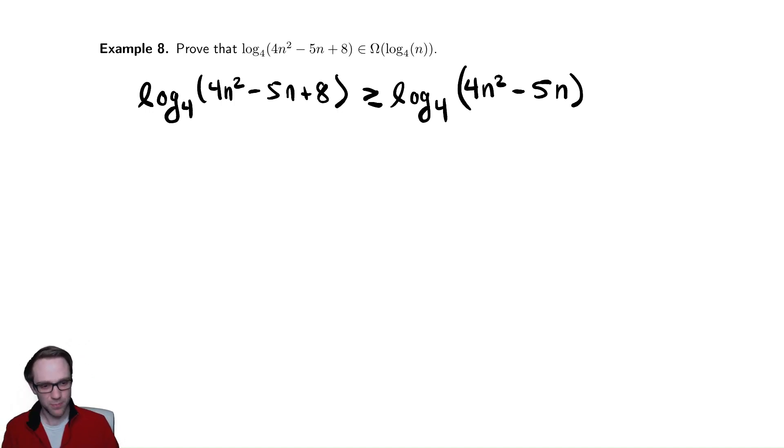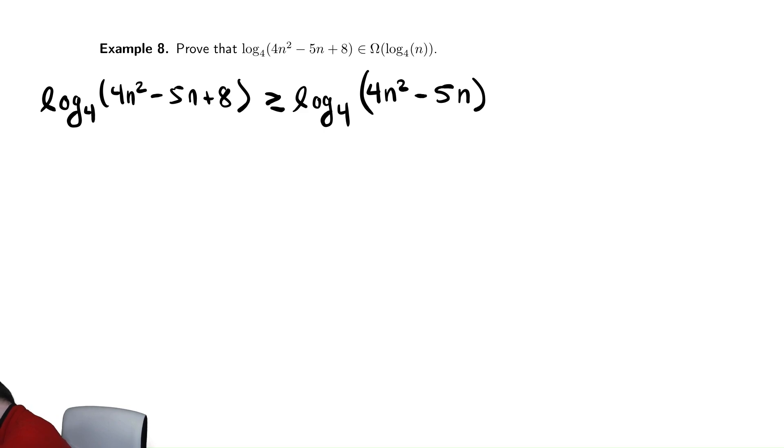And now we need to make this thing smaller. It might not be obvious to you. Negatives tend to confuse people sometimes with inequalities, so we'll try and be careful here. I'm going to show you what we're going to do, and then we'll justify it. I'm going to replace the negative 5n with negative 5n². You might say, well, is that even true? Negatives might be confusing with inequalities. Let's divide that inequality by negative 5n.